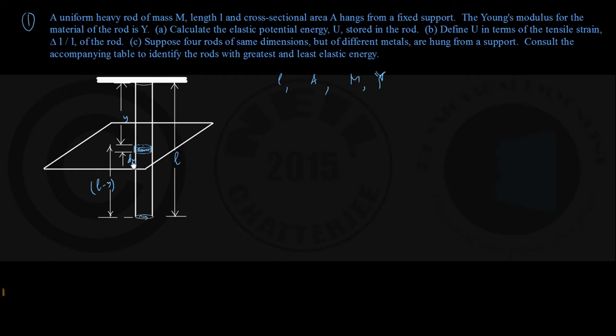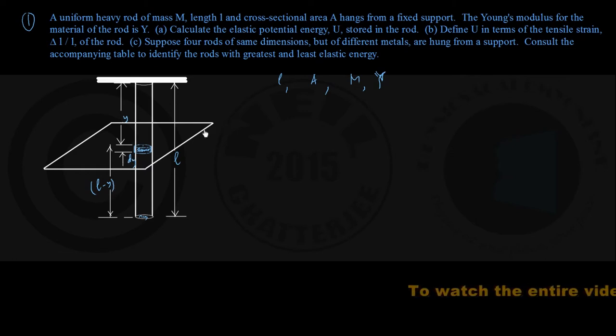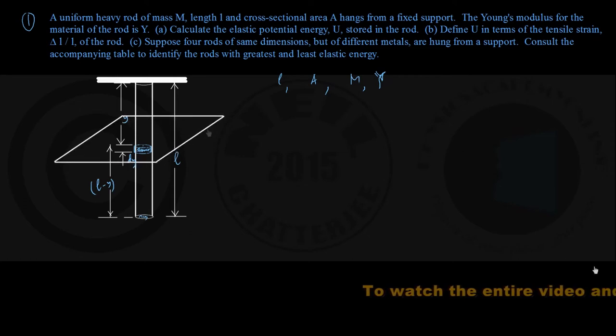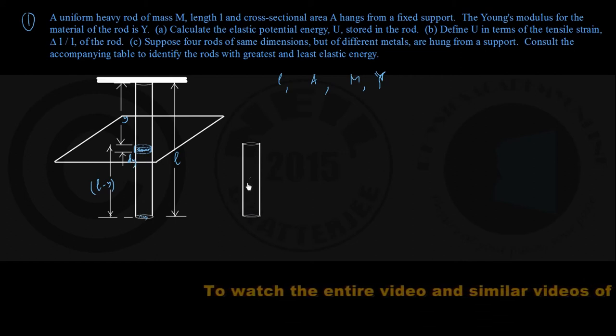But my imaginary horizontal plane is cutting this vertical rod into two parts, one of length Y that is above this infinitesimal element and other of length L minus Y that includes the infinitesimal element. So, if you divide like this and consider this lower part only, this lower part I am talking of, of length L minus Y which includes this infinitesimal element.